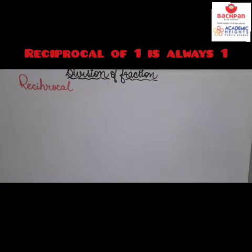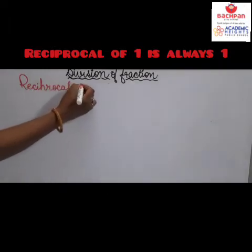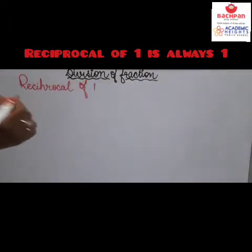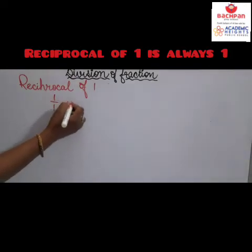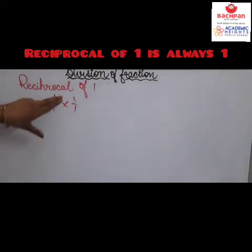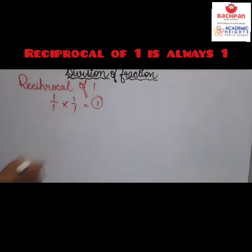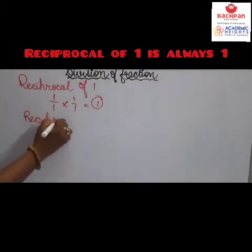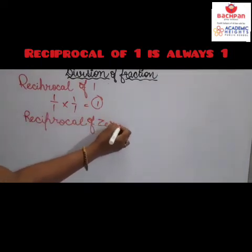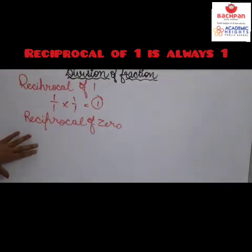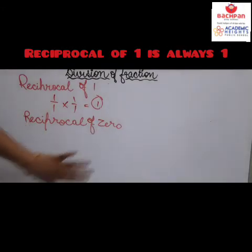The reciprocal of 1: since 1 can be written as 1 upon 1, its reciprocal is also 1 upon 1. So the reciprocal of 1 is always 1. The reciprocal of 0 does not exist, because 0 has no value.